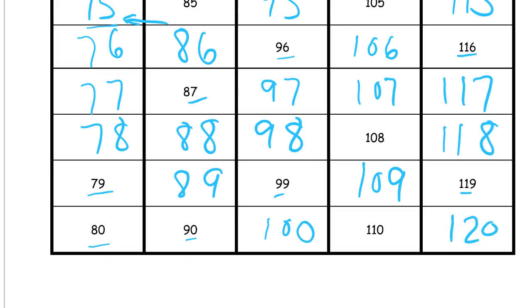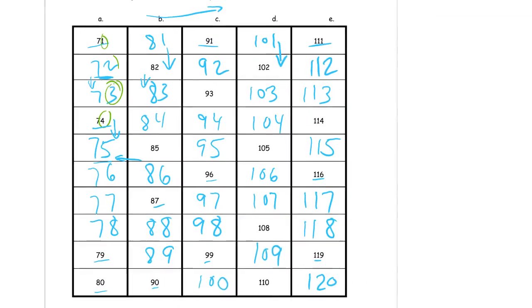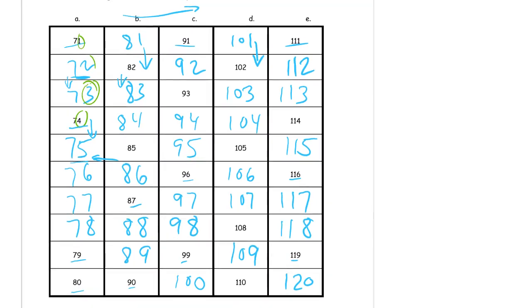So if we zoom out, we can see the whole grid. And now maybe it'll make a little more sense to you. You can see this goes 71, 72, 73, 74, 75, 76, 77, 78, 79, 80, 81, 82, 83, 84, 85, 86, 87, 88, 89, 90. And so on all the way to 120.